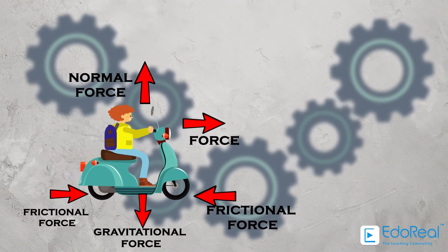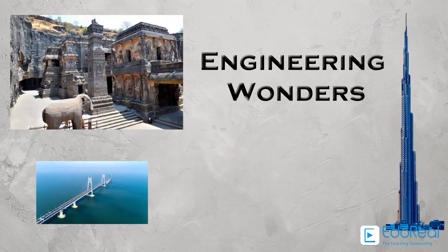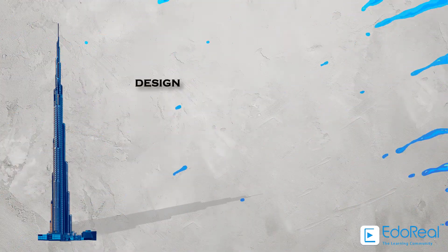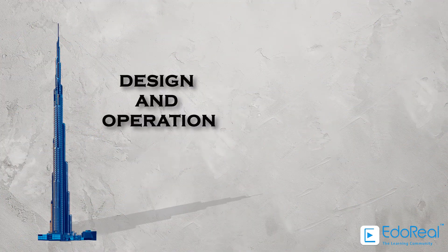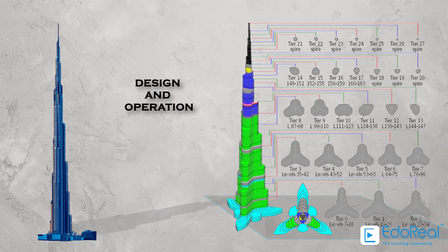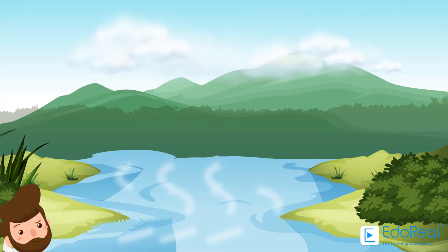If we can thoroughly understand all the forces acting on a system, we can create engineering wonders. Burj Khalifa in UAE is the tallest living structure till now. From its foundation to its structural components and mechanical systems, the design and operation of the tower is based on the fundamentals of engineering mechanics.